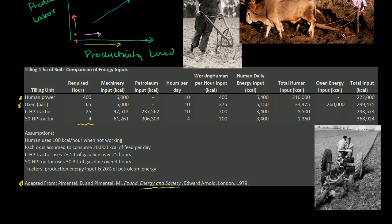These are their numbers: if you're using human power to till one hectare of soil, it'll take 400 hours. Oxen power, and this should be a pair of oxen, 65 hours. A six horsepower tractor, 25 hours. A 50 horsepower tractor, four hours.